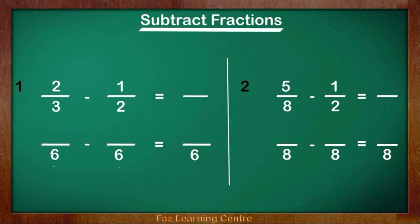3 times what equals 6? 3 times 2 equals 6. The rule is: if you times the denominator by 2, you have to times the numerator by 2 as well. 2 times 2 equals 4, giving us 4 over 6. You may have realized that 2 over 3 is equivalent to 4 over 6.